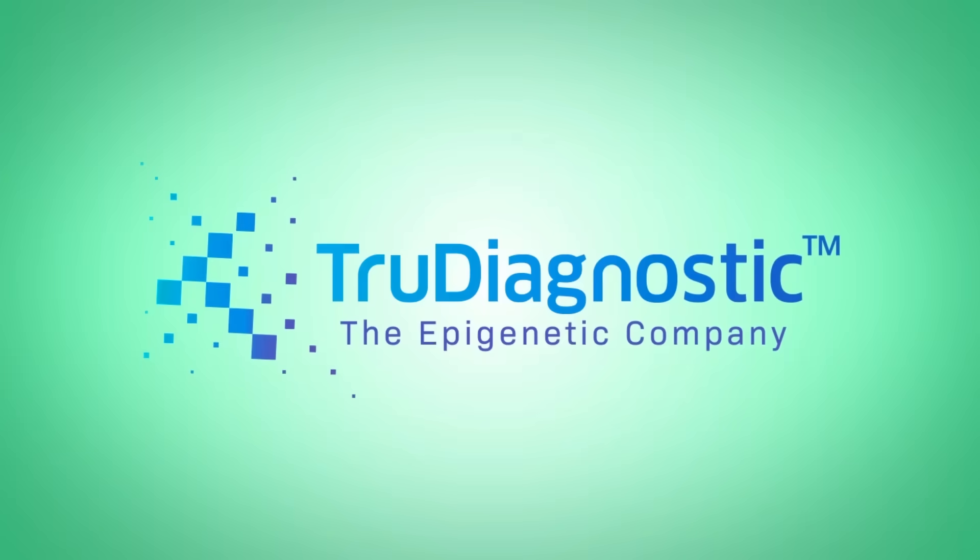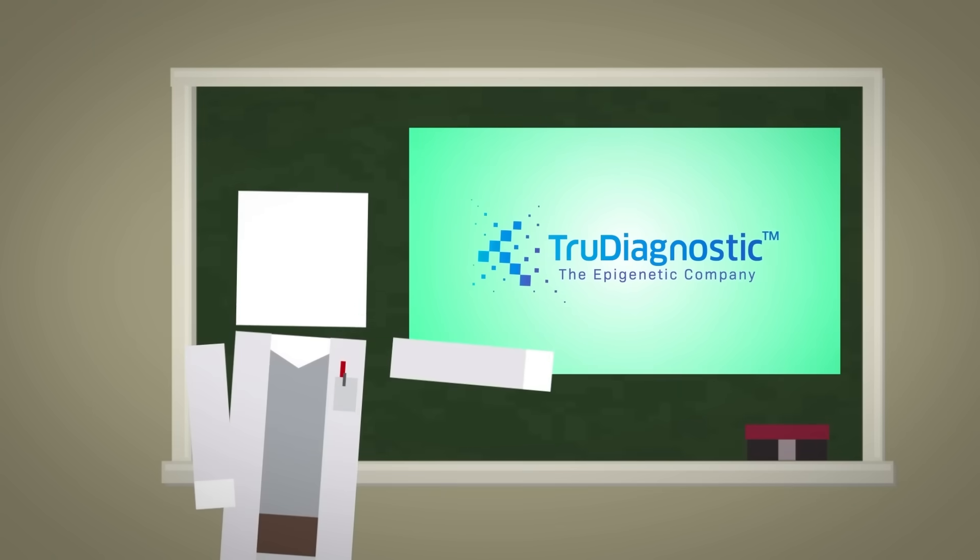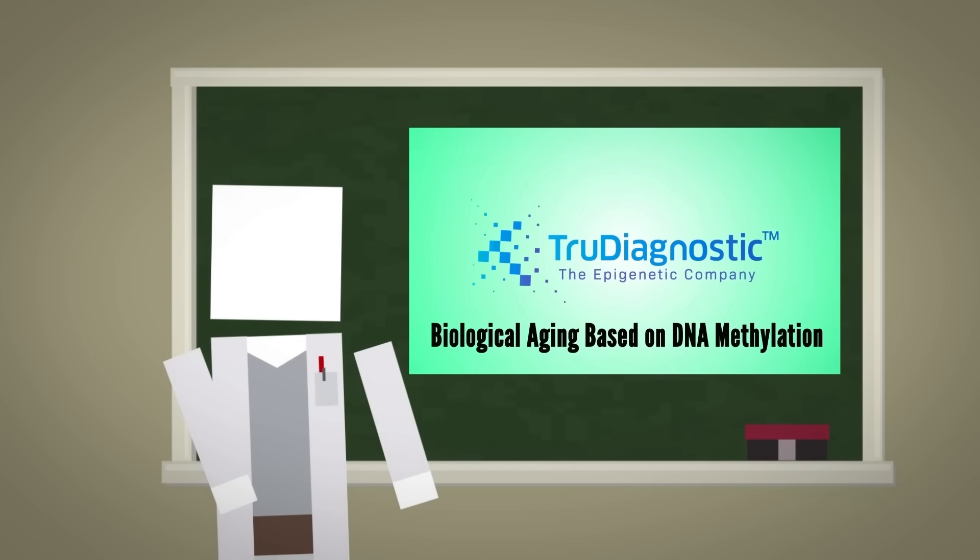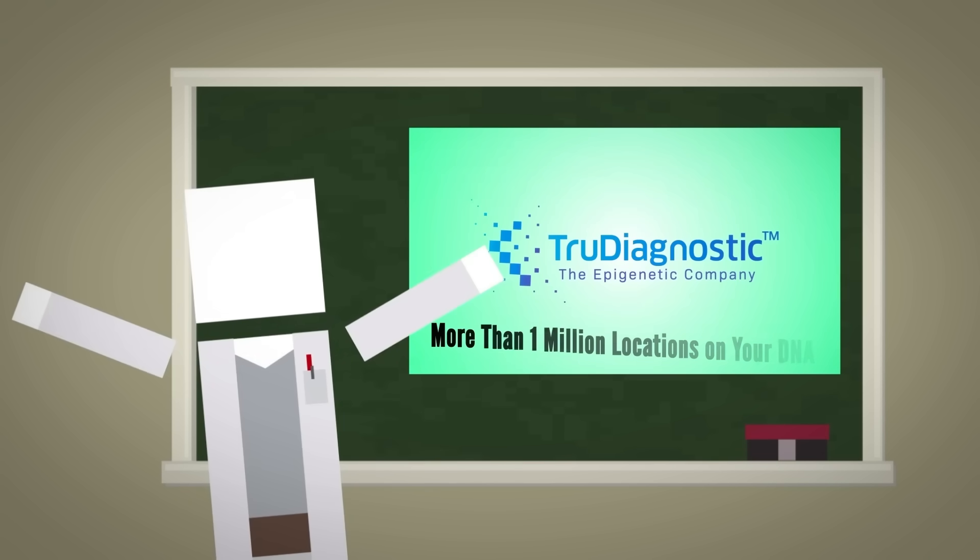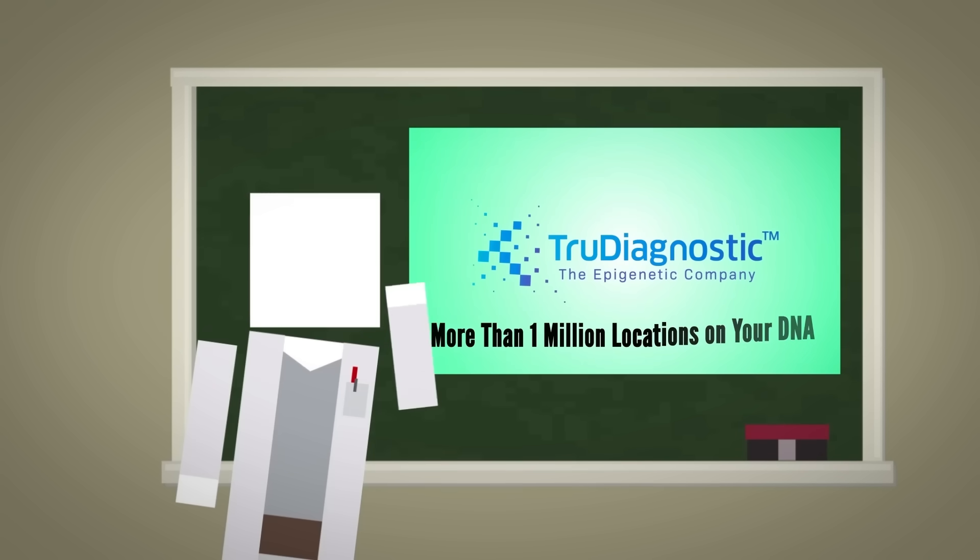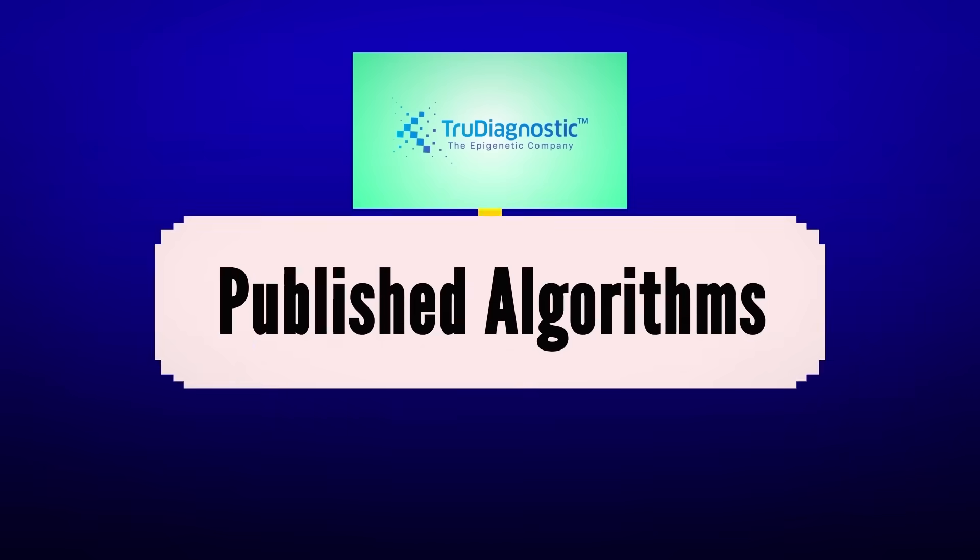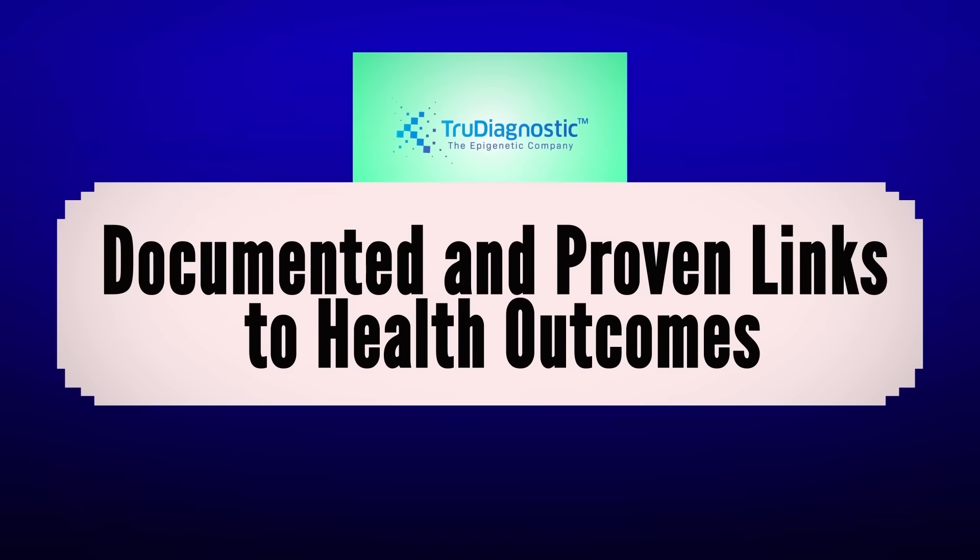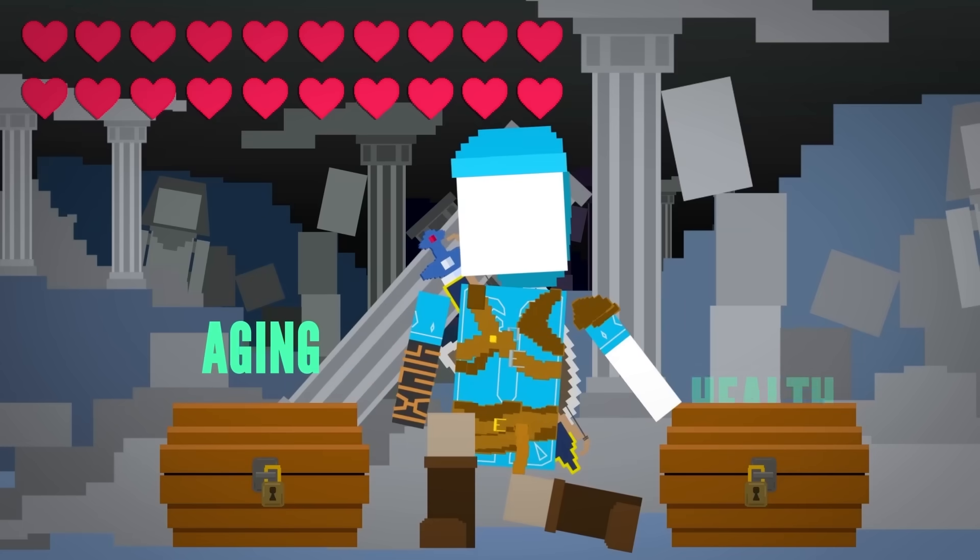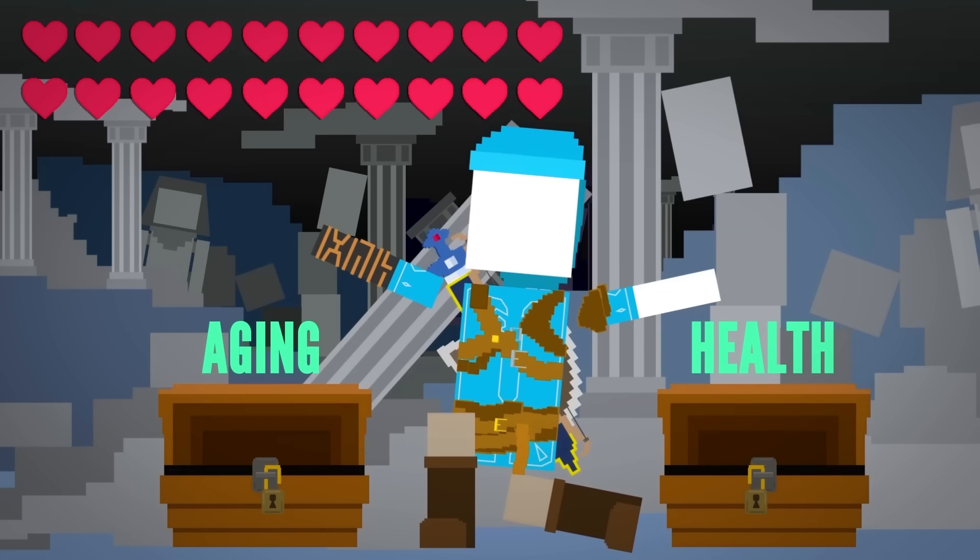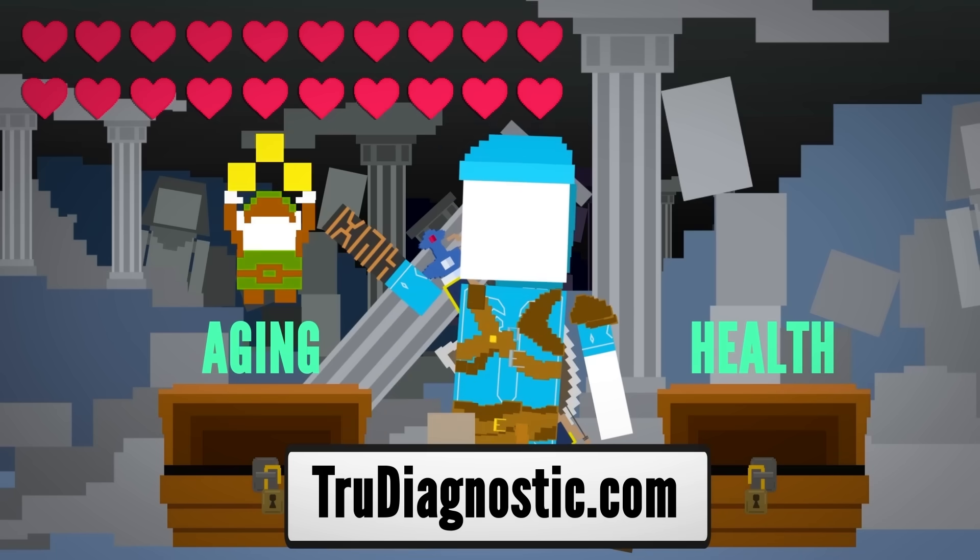Thank you to our sponsor True Diagnostic. True Diagnostic is an epigenetic research and testing company specializing in biological aging based on DNA methylation. With the ability to test more than 1 million locations on your DNA, True Diagnostic takes biological aging insights to the next level. They only use published algorithms with documented and proven links to health outcomes. To learn more about other aging and health related secrets you can unlock from your epigenetics, visit TrueDiagnostic.com or click the first link in the description.